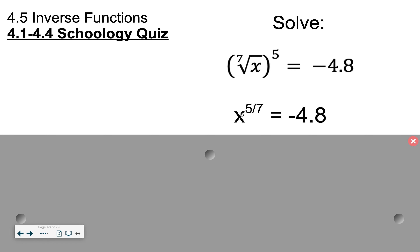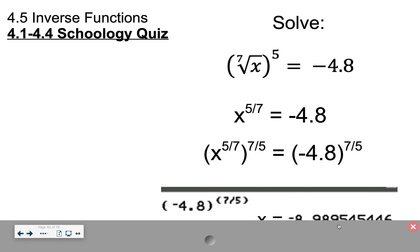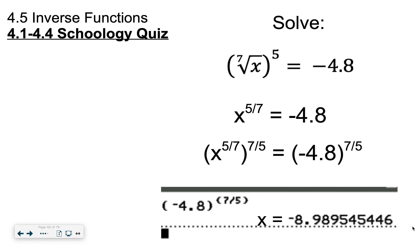If you're going to solve for a power — if it was x squared we would just square root — now rather than doing it in two steps you can raise the five-sevenths to the reciprocal power of seven-fifths. And of course if we do that on the left-hand side we want to do that on the right-hand side to balance. You would pick up your calculator and type in negative 4.8 to the seven-fifths power, and I got negative 8.9895.